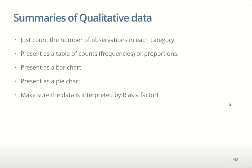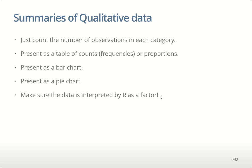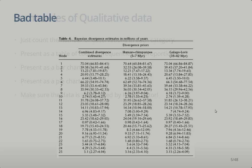One thing to be careful of in RStudio is making sure that R is correctly interpreting the variable as a factor. This is particularly the case when the data might be numeric — for example, body condition score is a number, and by default R will treat it as continuous data even though it's actually a grouping variable. We'll show you how to handle that in the laboratory exercises.